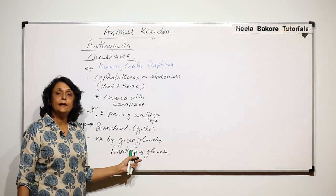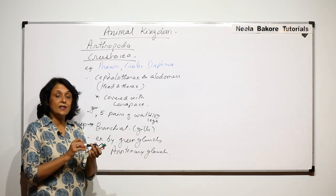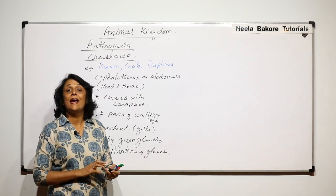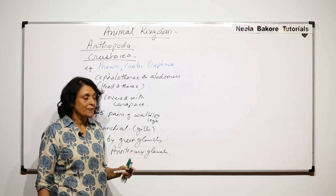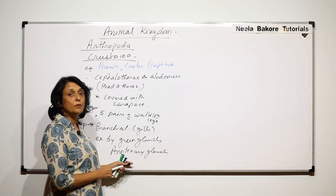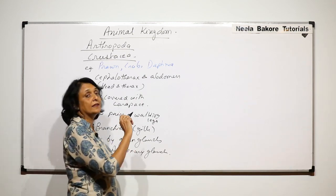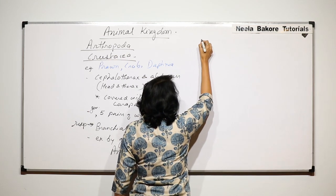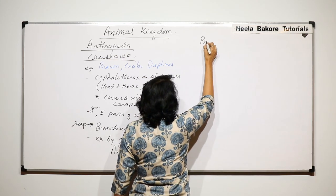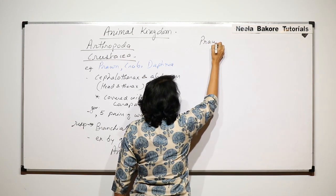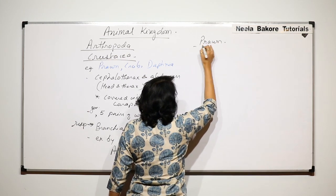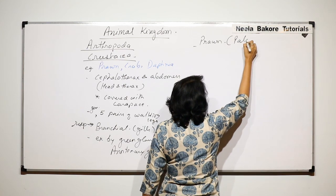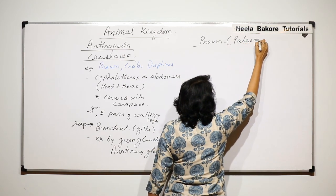These are called antennary glands because they open at the base of the antenna. So these are some unique features. Now let us take the examples. The first example is prawn; the scientific name is Palaemon.